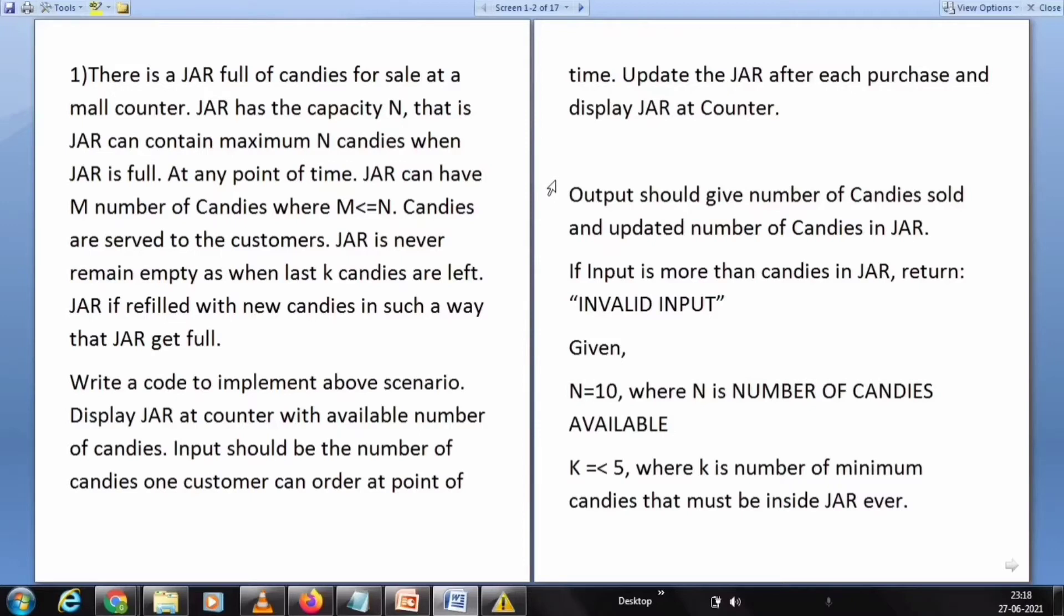We should update the jar after each purchase and display the jar at the counter. So the output should give the number of candies sold and updated number of candies in the jar. If input is more than the candies in jar, return 'invalid input'. For this, N equals 10 where N is the number of candies available, and K is less than or equal to 5, where K is the number of minimum candies that must be inside the jar ever.